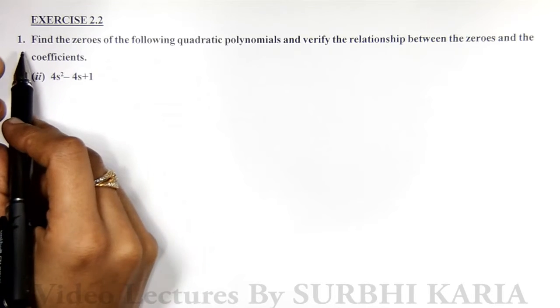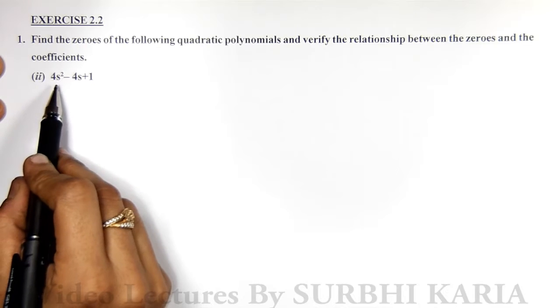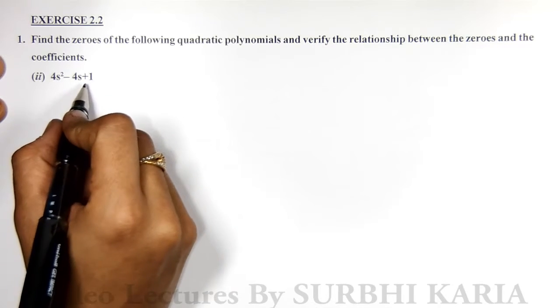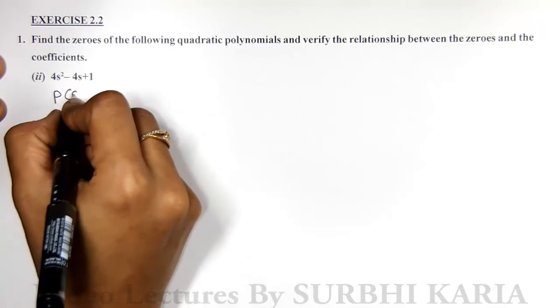Exercise 2.2, question number 1, the second question: 4s² - 4s + 1. You can see here, x terms are not used, so we will rewrite this as p(s).